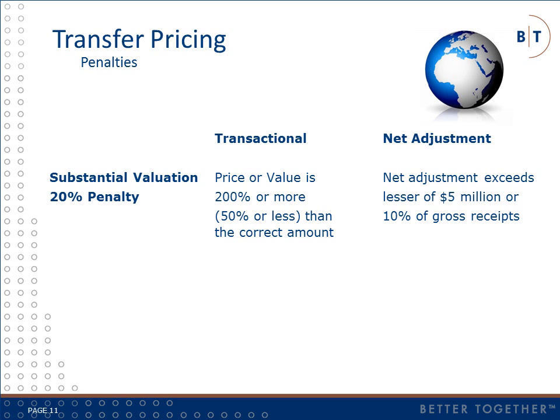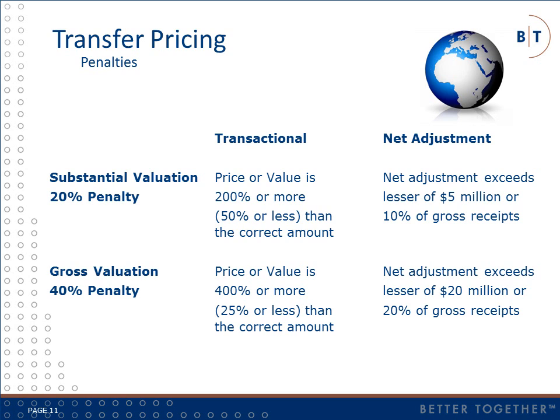There are two penalty tiers. First, if a substantial valuation misstatement exists, a 20% penalty will be applied to the tax due. If a gross valuation misstatement exists, a 40% penalty will be applied to the tax due. The penalty is applied on either a transactional basis or on a net adjustment basis, whichever will result in the largest penalty. In the event the IRS determines that something of value was transferred and there was no price charged, a transactional penalty will be applied at the 40% rate. Many other countries have similar transfer pricing penalty laws.